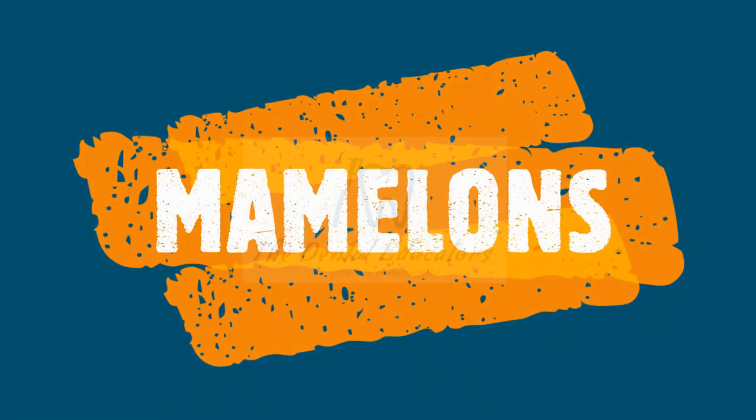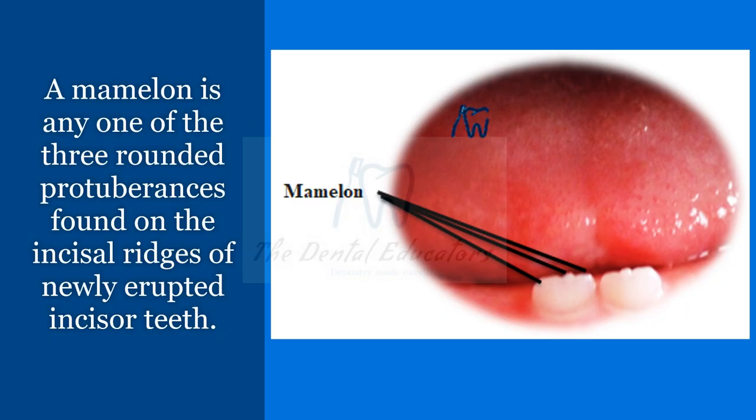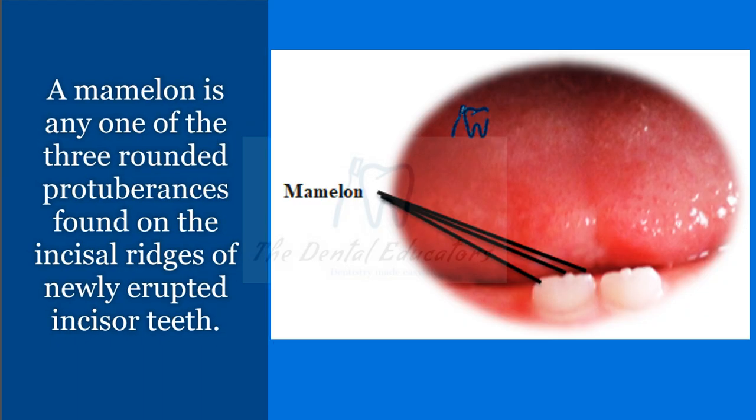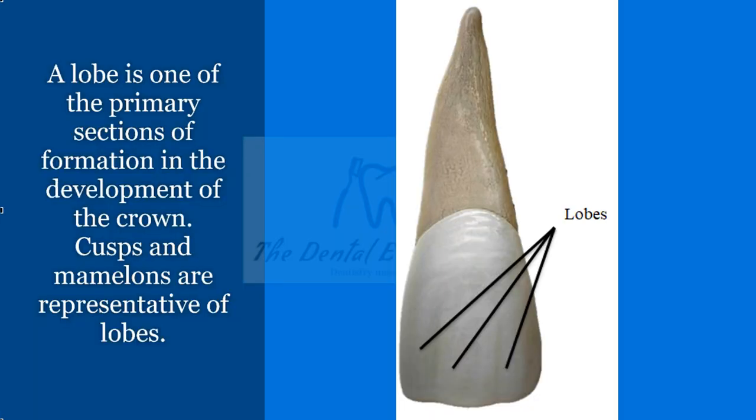The mamelon is any one of the three protuberances found on the incisal edges of newly erupted incisor teeth. These are the sharp projections that are only seen in newly erupted teeth when they first appear in the oral cavity.